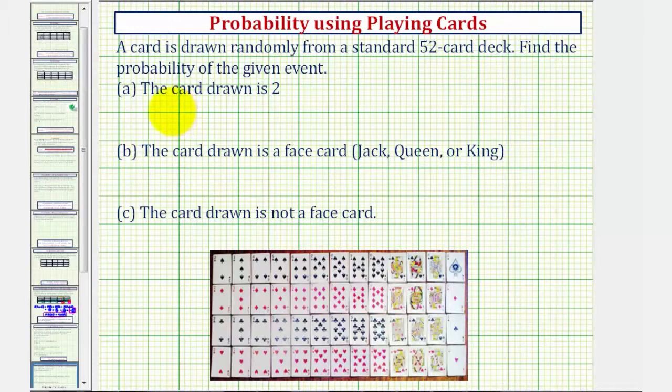For part A, we want to find the probability that a card would be a 2. The probability of selecting a 2 is equal to the number of 2s divided by the total number of cards.